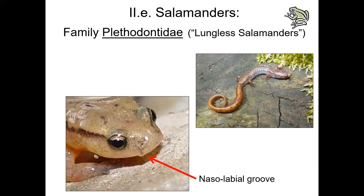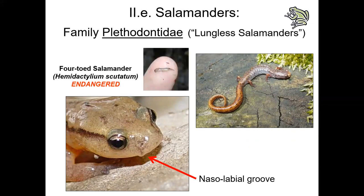Let's move on to family Plethodontidae — the lungless salamanders. This represents the largest family of salamanders; in fact, two-thirds of all salamander species on the planet belong to this family. All are lungless — the primary mode of respiration is through their moist skin. All plethodontids tend to be very elongated and really thin-bodied compared to the stout robust bodies of the ambystomatids. All species have prominent costal grooves, which you can see on this Hemidactylium scutatum or four-toed salamander, and they have the presence of nasolabial grooves — the small groove running from the nostril to the upper lip found only in this family.